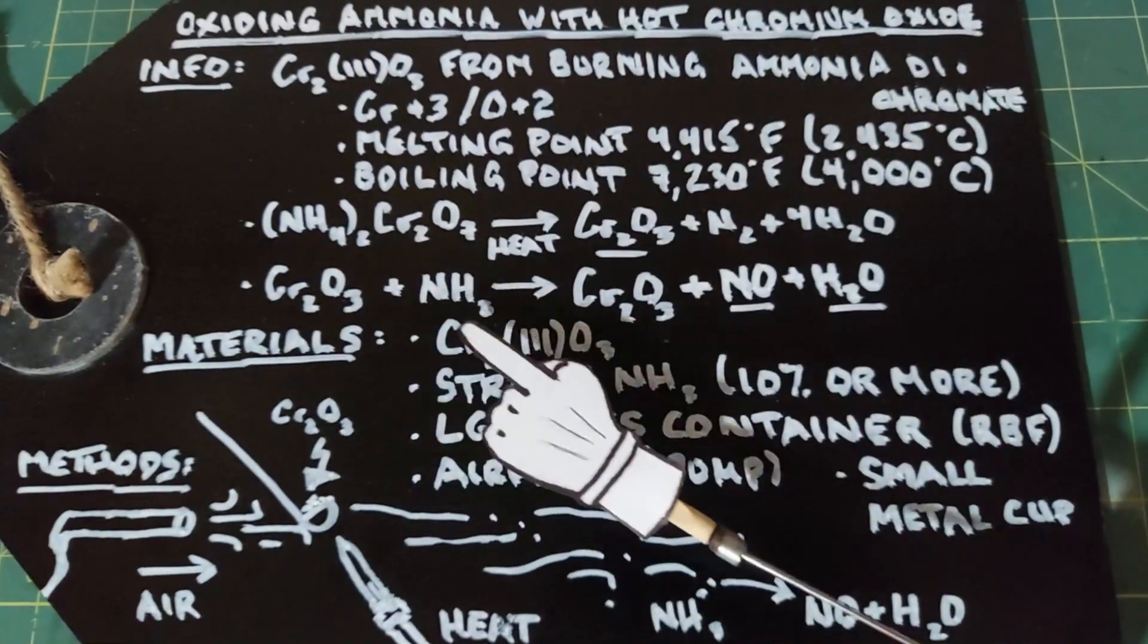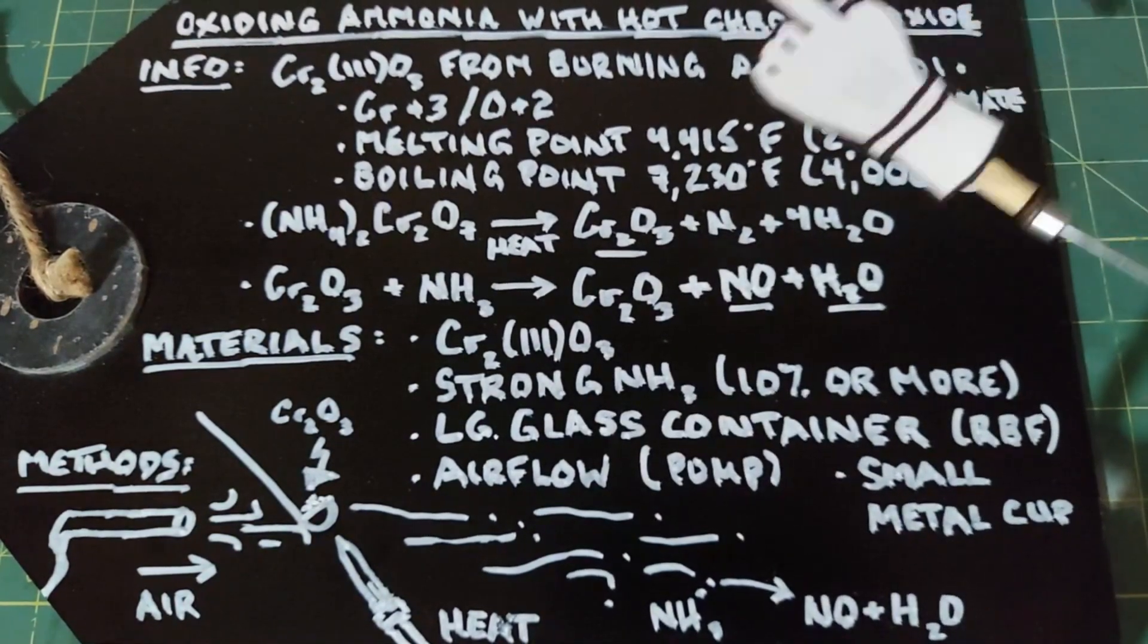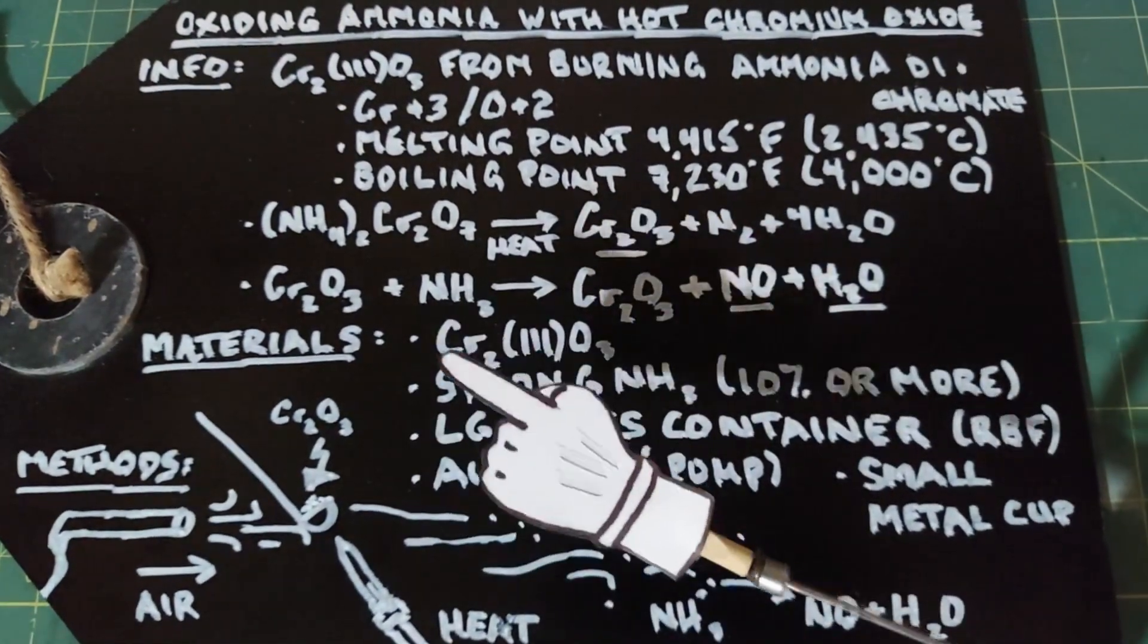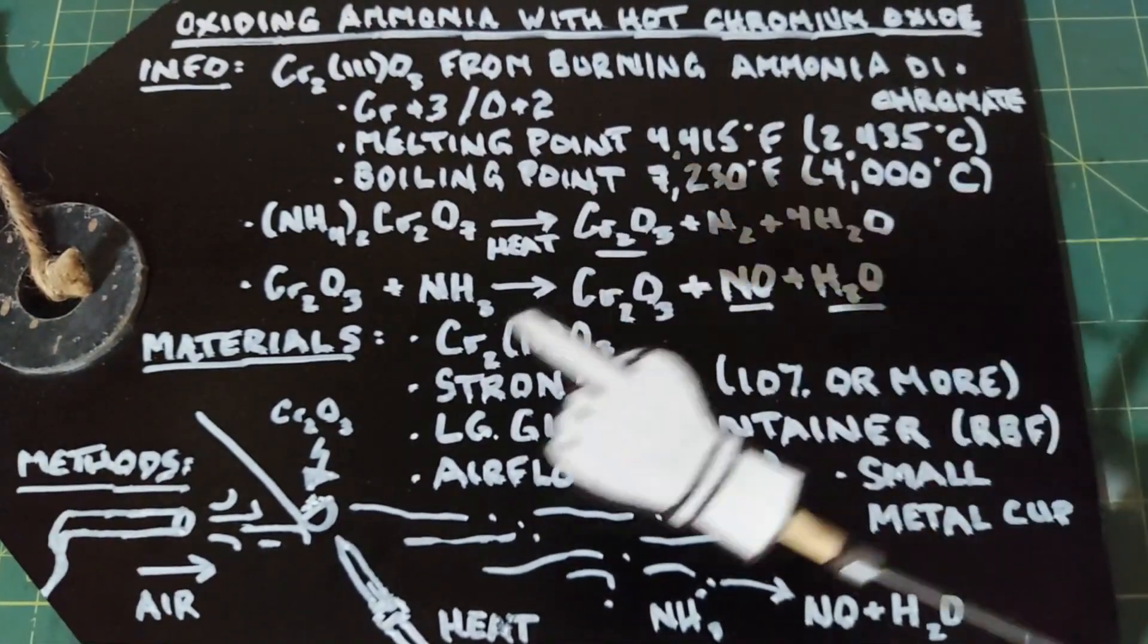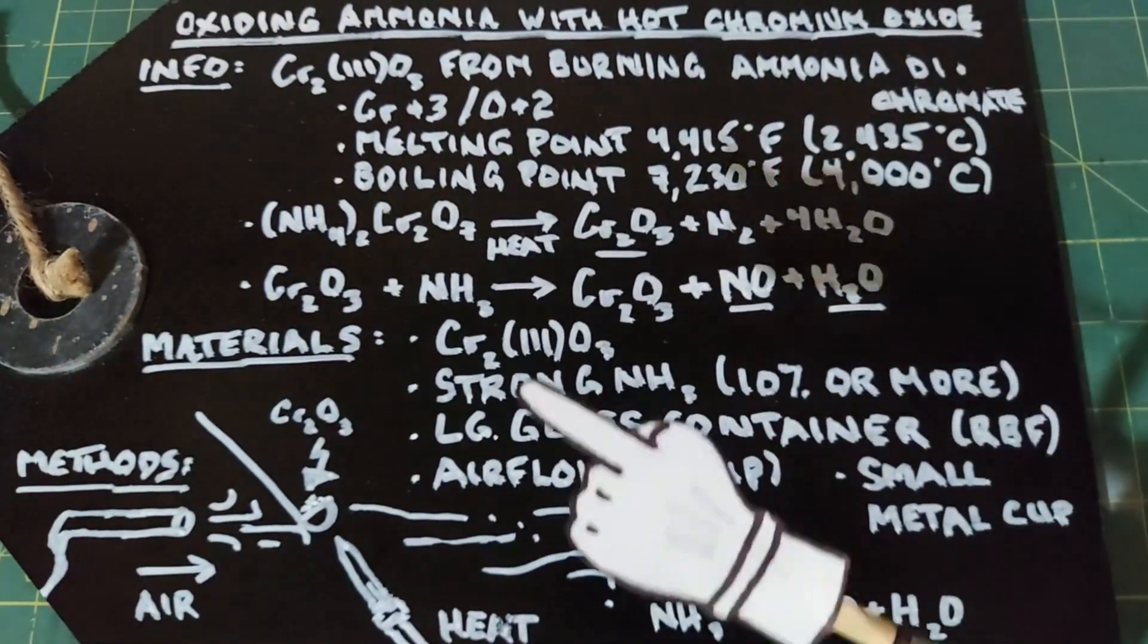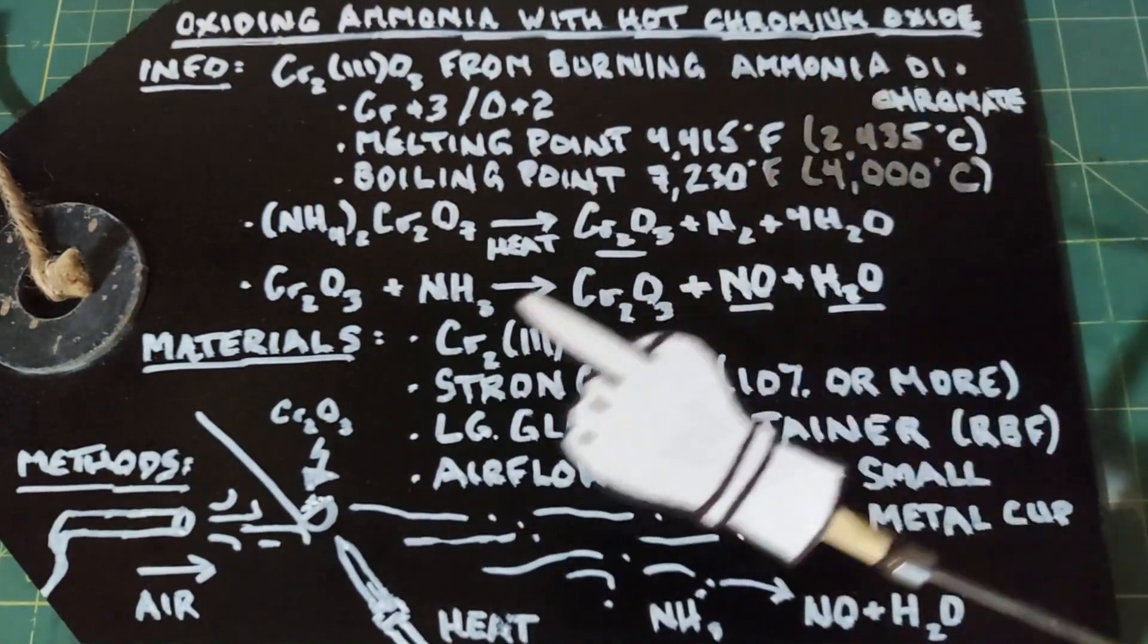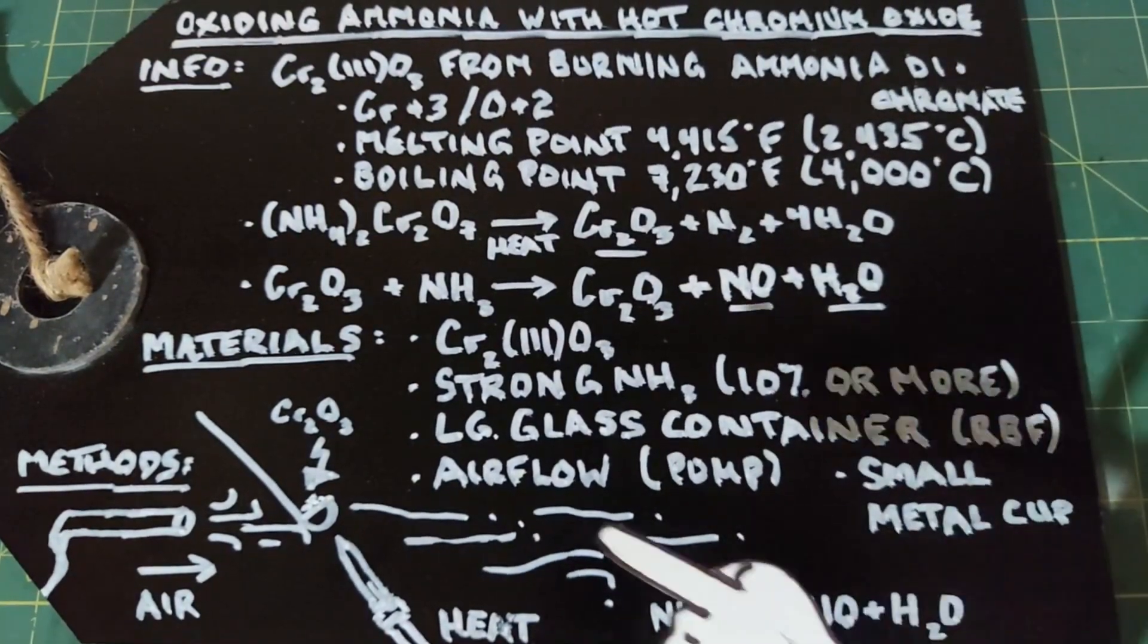For our materials, we need the chromium(III) oxide which we're going to get from burning ammonium dichromate. We need some strong ammonia, 10 percent or more. We need a large glass container—I'm going to use a round bottom flask. We need some airflow, a source of heat to heat the chromium oxide, and a small metal cup to put the chromium oxide in.